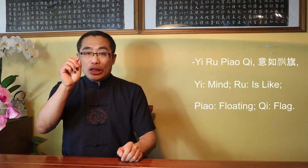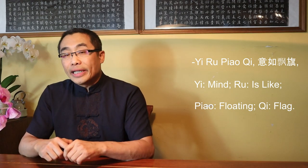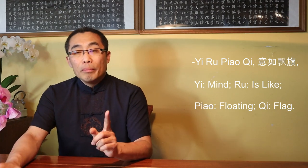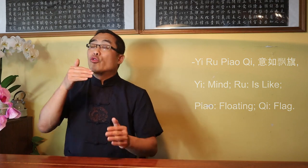Proverb 3, Yi Ru Piao Qi. This is a not-so-popular Bagua proverb. Let me translate it word-by-word first. Yi means mind, Ru means is like, Piao means floating, Qi means flag. Literally speaking, it means the mind is like a floating flag. Now the question is, is the translation correct? Not at all. Let me explain. First of all, where did this proverb come from? This proverb was first mentioned in Jiang Rongqiao's Bagua book, a very popular small book introducing Jiang Rongqiao's Bagua practice, a simplified form of Zhang Zhaodong's Xing Yi Bagua Palm. This book was very popular back then. So what is the real meaning of this proverb?